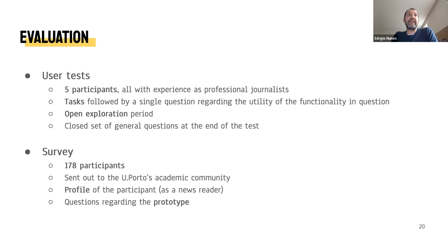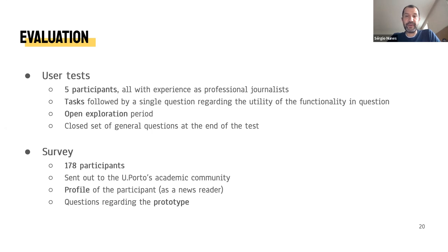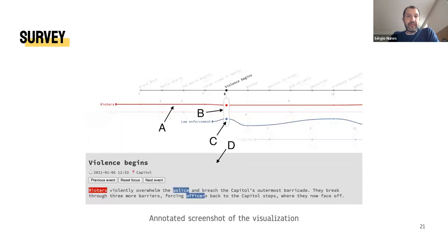In our second evaluation study, we conducted surveys with a larger and more diversified audience. We tried first to understand the reader's profile and then their feedback on the application, with a very small response time in mind — approximately five minutes. The survey was distributed across the University of Porto academic community and we received about 178 valid answers. The survey was divided into two distinct sections: one targeting the participant's profile, and the other targeting the prototype. An annotated screenshot of the visualization was included, as well as a brief video clip illustrating some of the possible interactions.